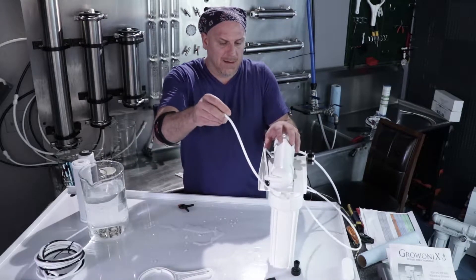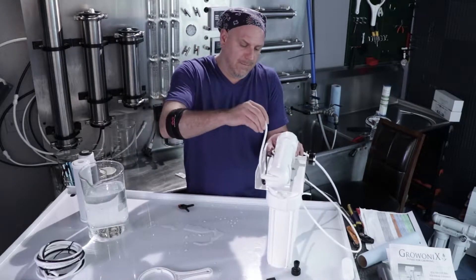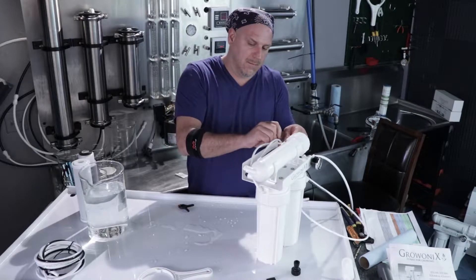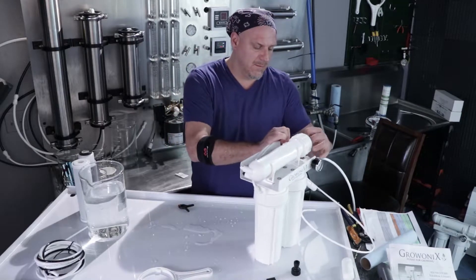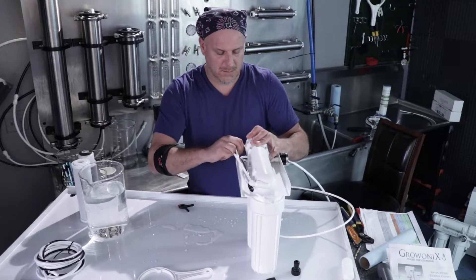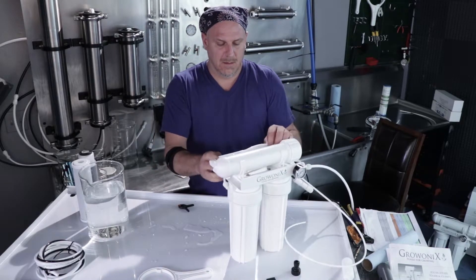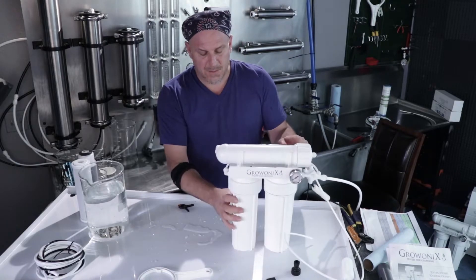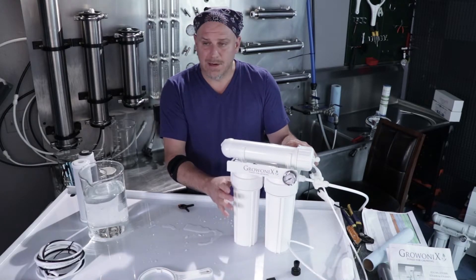So I'm going to turn off the feed water and I'm going to hook this tube back up to the membrane input like so. And that's it, the carbon filter has been flushed and now we're ready to start this unit up.